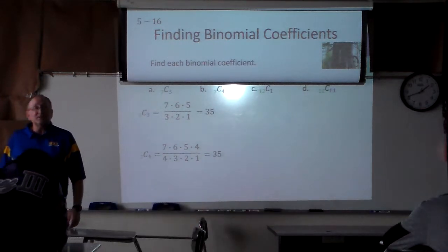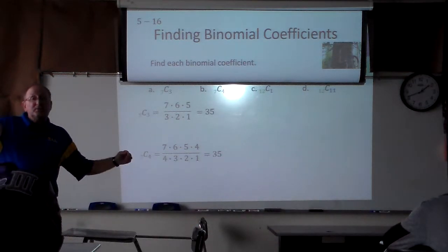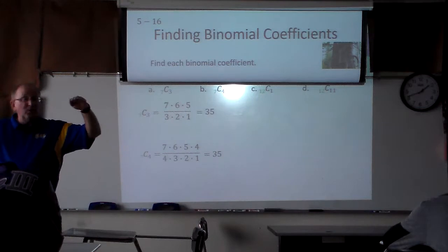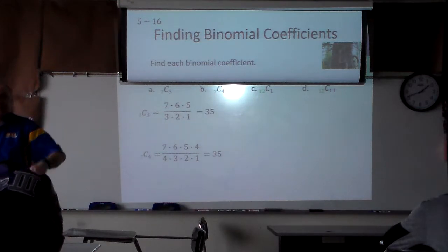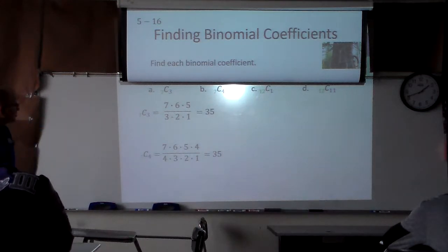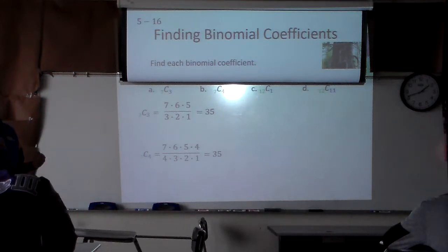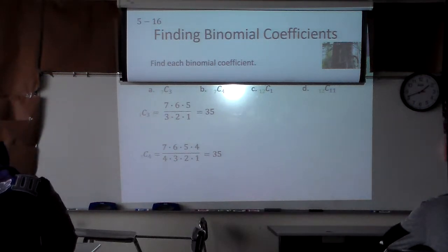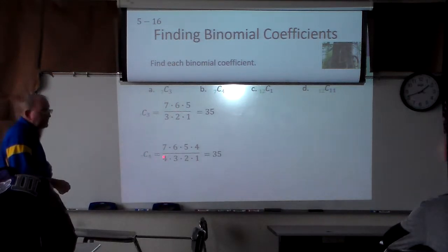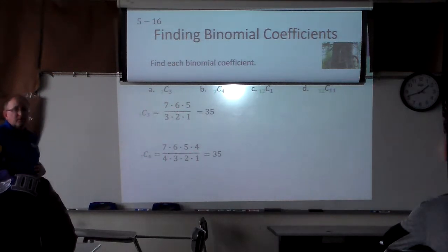Remember how we talked about symmetry? How the numbers go up and then come back down? Those are probably the two middle numbers that are next to each other — although sometimes they don't have to be next to each other — because the numbers go back up and then back down. There's a 7C3 and a 7C4, and they're both 35.